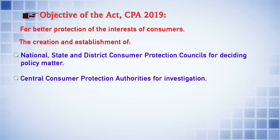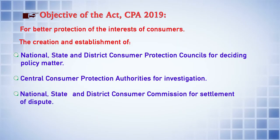Another institutional mechanism created under the law is called the Central Consumer Protection Authority. Their job is primarily to carry out investigation about violation of consumer rights, deviation from regulations provided by regulatory bodies, or whether any offences are committed or any misleading advertisements are made to the public. For that purpose, the Central Consumer Protection Authority has been created.